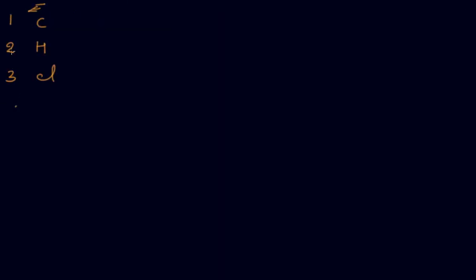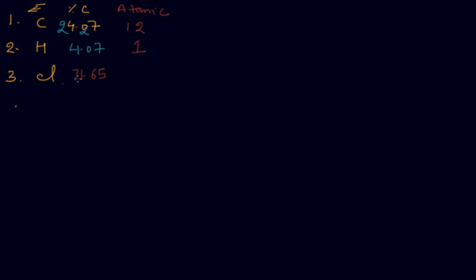First, we write down the serial number, then the symbol of the element, and their percentage composition. Carbon is 4.07%, hydrogen is 24.27%, and chlorine is 71.65%. Then we write the atomic mass: carbon = 12, hydrogen = 1, and chlorine = 35.5.